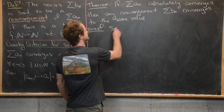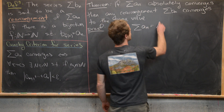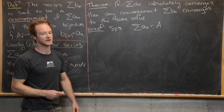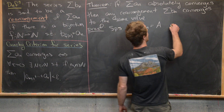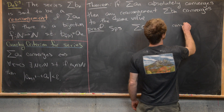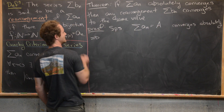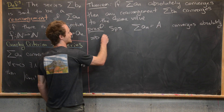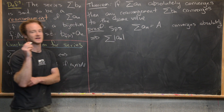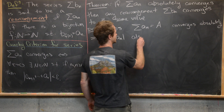So let's look at the proof. Let's suppose that the sum of the A_N terms equals capital A — that's the convergent value — and we'll say that this converges absolutely. That immediately implies that the sum of the absolute values of the terms, in other words the sum of |A_N|, also converges.